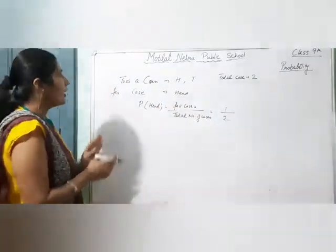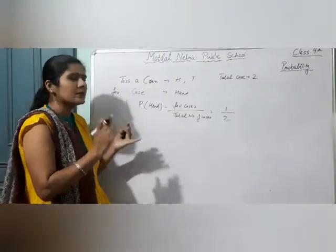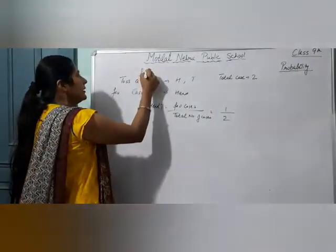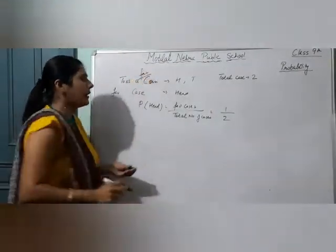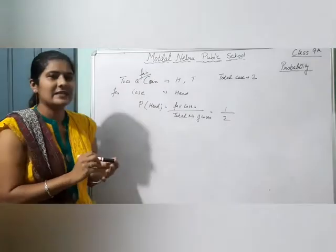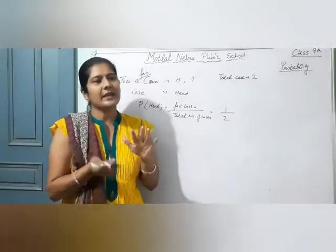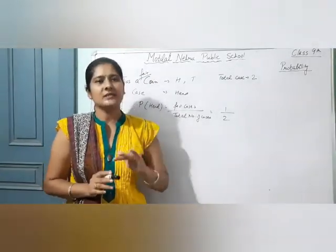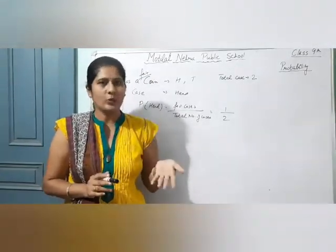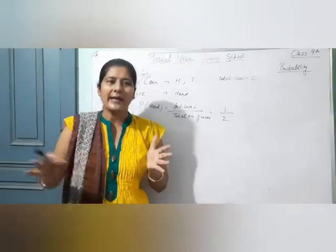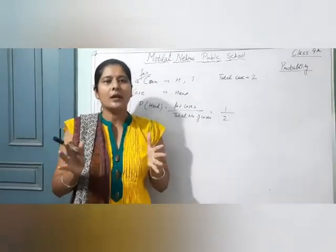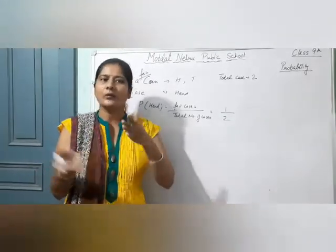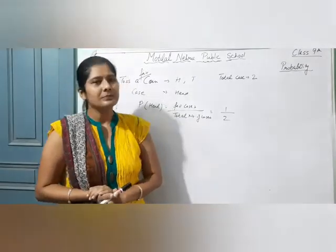यहाँ पर हम एक fair coin लेते हैं. Fair coin का मतलब — उसकी एक side head होनी चाहिए, एक side tail होनी चाहिए, और दोनों ही आने के chances equal होने चाहिए. मतलब वो biased ना हो — कुछ ऐसा ना हो कि वो एक ही side से नीचे गिरेगा.